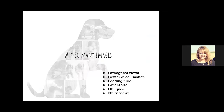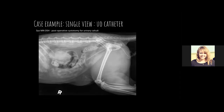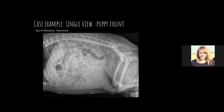Now for case examples — why do we sometimes need so many images? In some cases, a single view is enough. When placing a urinary catheter, we just need to confirm it's in the bladder — since there's only one orifice, one view suffices. Another example is a puppy count: we don't need multiple views to count three different mineralized skulls within the dog.